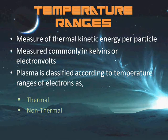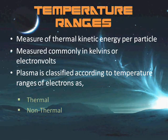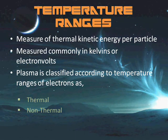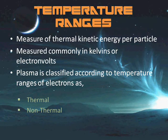Thermal plasmas have electrons and heavy particles at the same temperature and they are in thermal equilibrium with each other. Non-thermal plasmas, on the other hand, have ions and neutrals at much lower temperature, normally at room temperature, whereas the electrons are at much higher temperature.